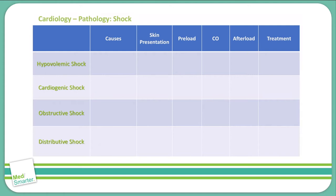For hypovolemic shock, the causes include hemorrhage, dehydration, and burns. We are decreasing the volume of our blood, so this is going to be either due to complete loss of total blood products or a third spacing that we often see with burns.